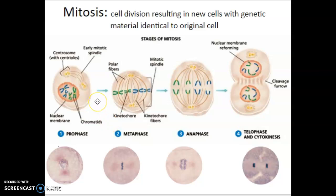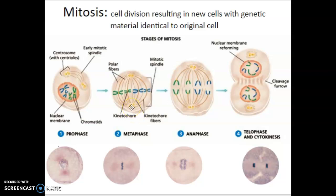The second phase of mitosis is metaphase, easily recognizable because all the chromosomes are lined up in the center of the cell. You can see here a fish cell in metaphase. The centrioles or centrosomes are on opposite poles of the cell, and we have cytoskeleton pieces called spindle fibers. There are kinetochore fibers going from centrosome to centromere, and polar fibers going from one pole to the other all the way across the cell. Together these are called spindle fibers, and that's how the chromosomes are lined up in the middle.